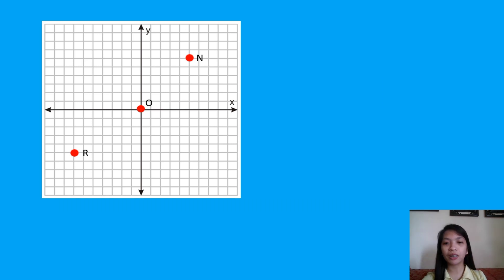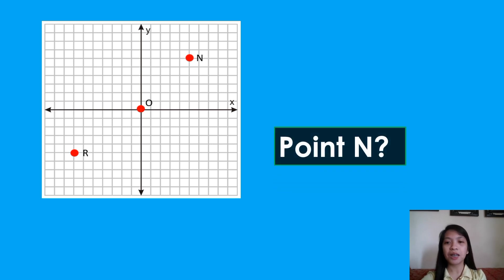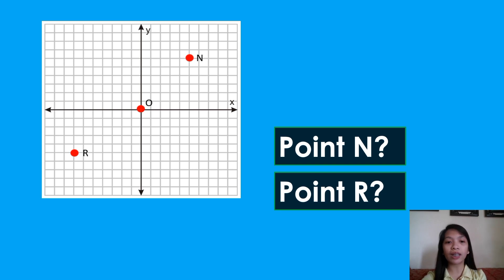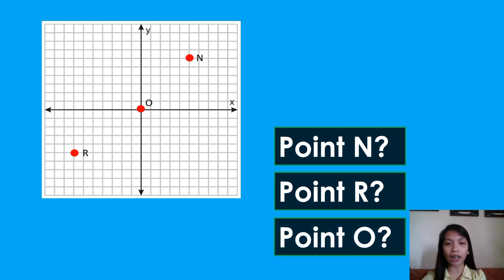In this figure, can we now describe the location of point M? Yes. Based on the figure, point M is located to the right of the vertical line Y and above the horizontal line X. What about point R? It is located to the left of the vertical line Y and below the horizontal line X. Point O is neither to the left nor to the right of line Y — it is on line Y and it is also on line X. These lines serve as our guide as we describe the location of points.